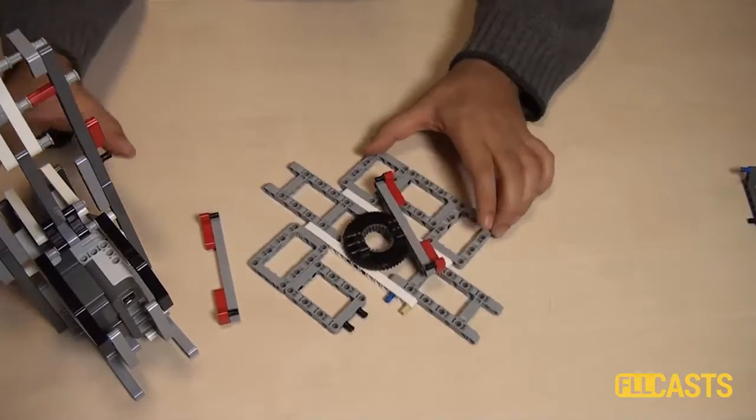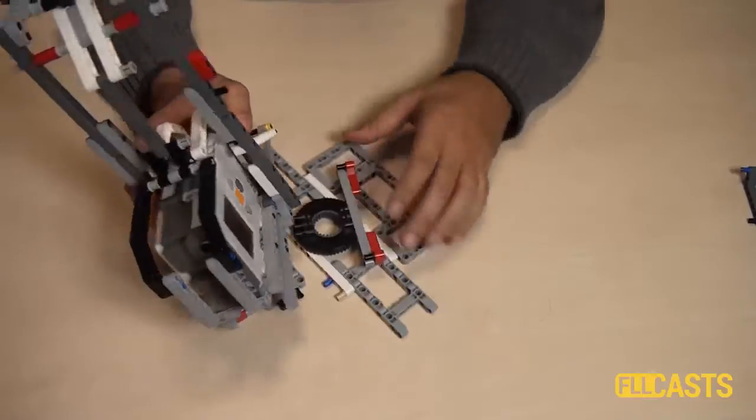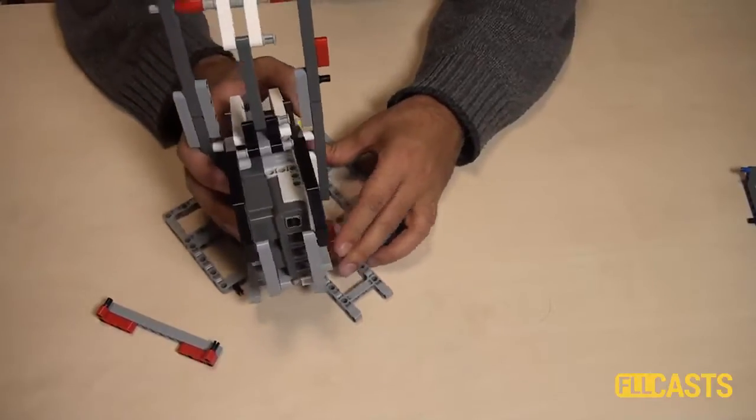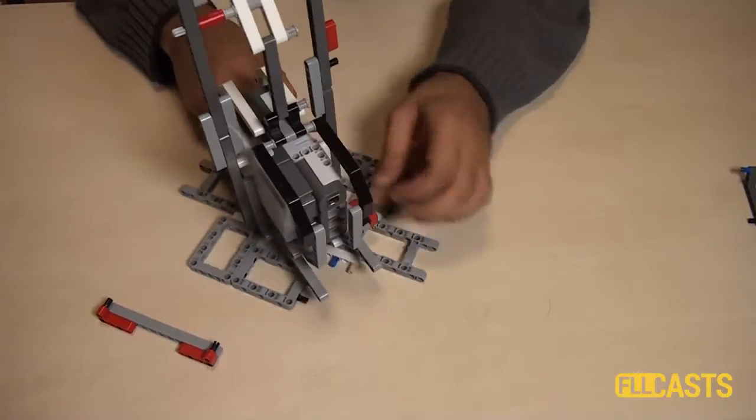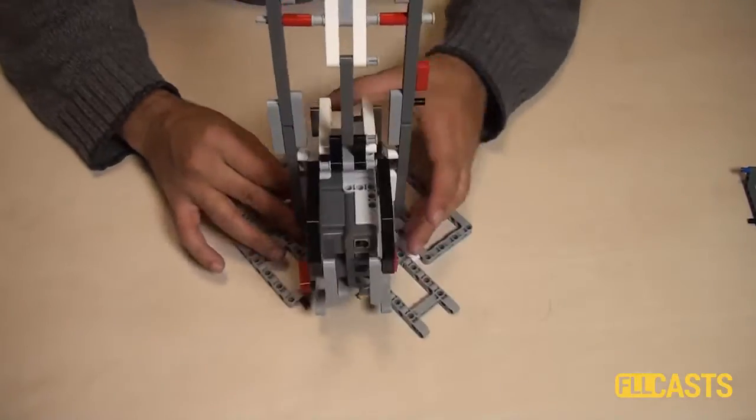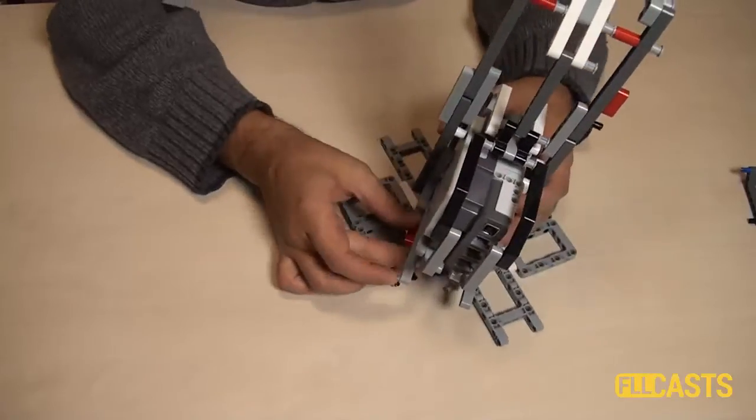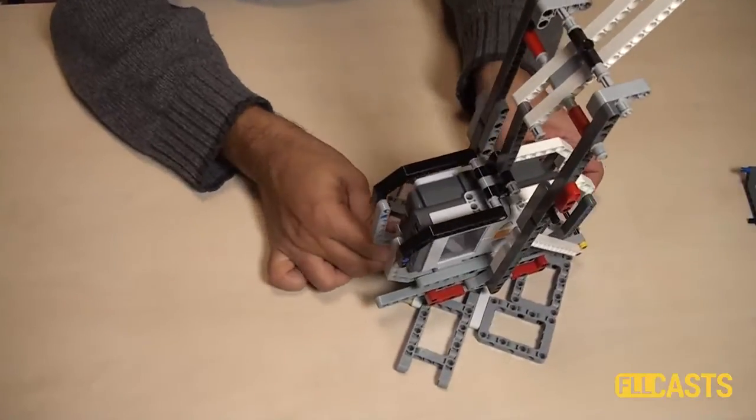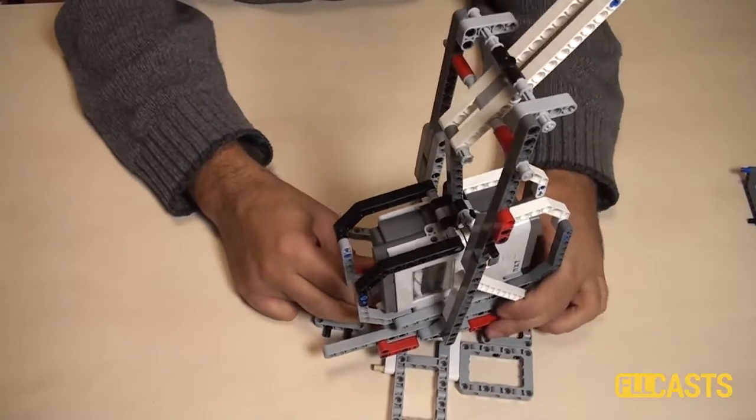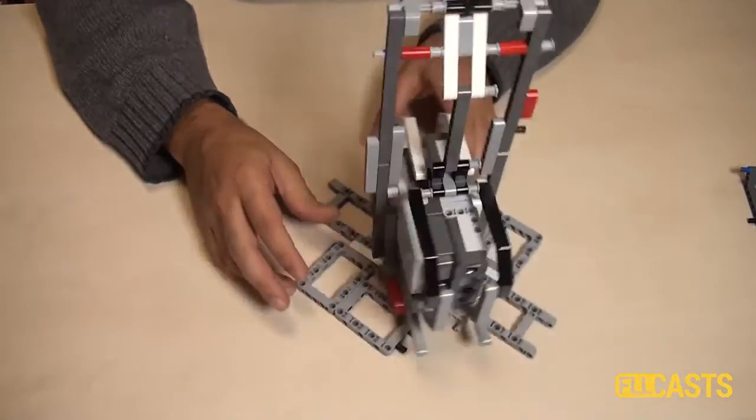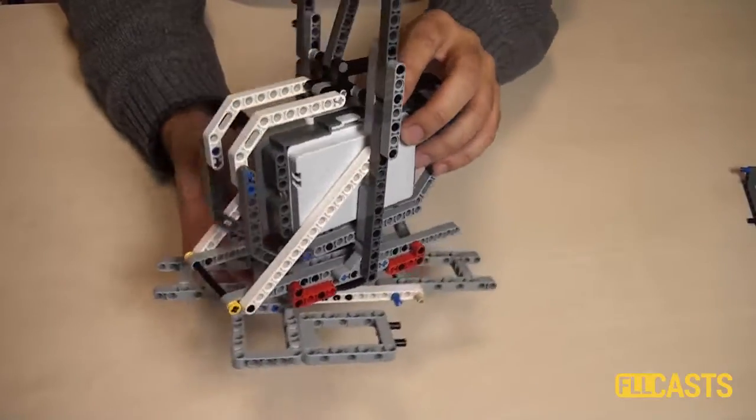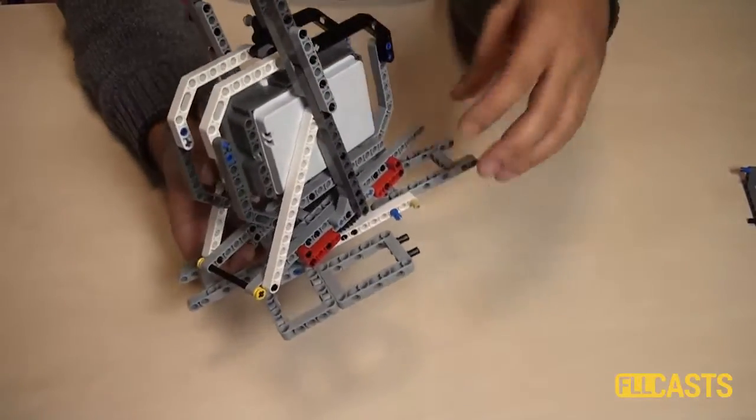And the whole process of attaching the robot and enhancing the base would look something like this. Just attach it on one side and then on the other side. Here's the attachment.